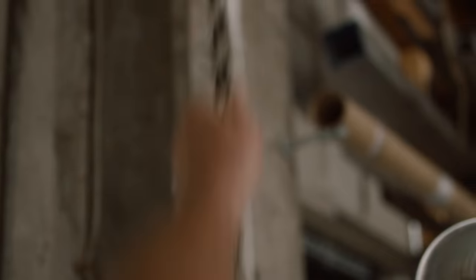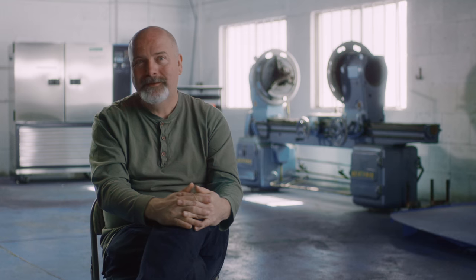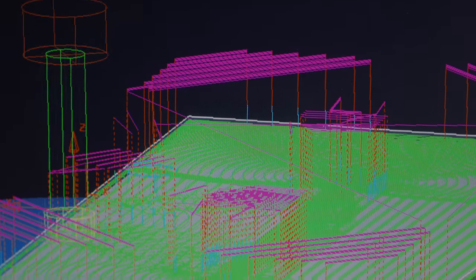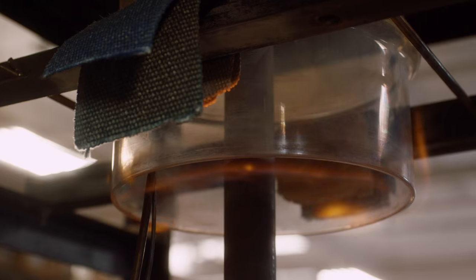Any engineer of course wants to build something that lasts, but that doesn't mean it's easy to build. How do you make rolling elements that last for 10,000 years?